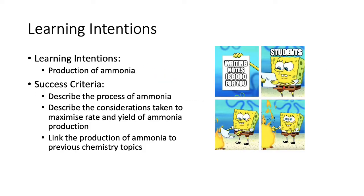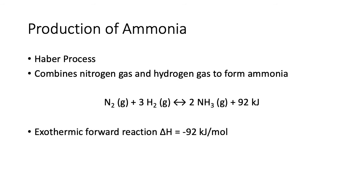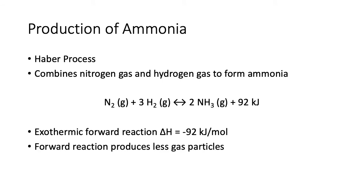This is important as it links the production of ammonia to previous chemistry topics. The production of ammonia is called the Haber Process — it combines nitrogen gas and hydrogen gas to form ammonia. That equation represents an exothermic reaction, and it is a forward reaction that produces fewer gas particles.